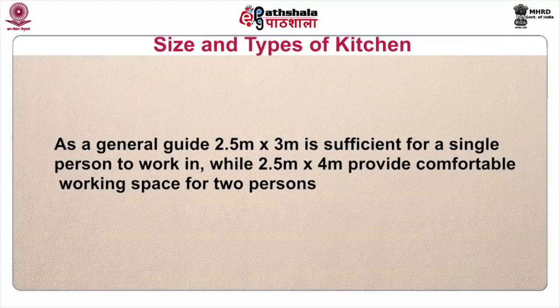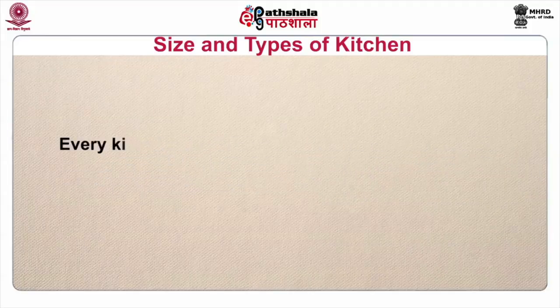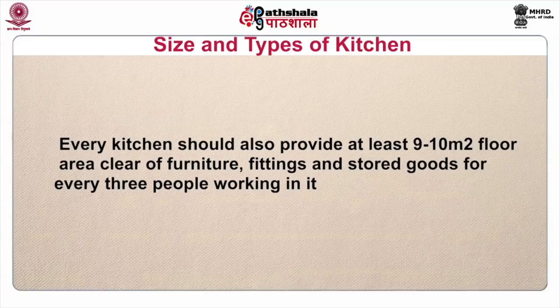As a rule, it is good practice to provide a compact arrangement of work tables and equipment so that unnecessary time and effort involved in extra walking, stretching and bending is avoided. As a general guide, 2.5 meters by 3 meters is sufficient for a single person to work in, while 2.5 meters by 4 meters provides comfortable working space for 2 persons. Every kitchen should also provide at least 9 to 10 square meters of floor area, clear of furniture, fittings and stored goods for every 3 people working in it.